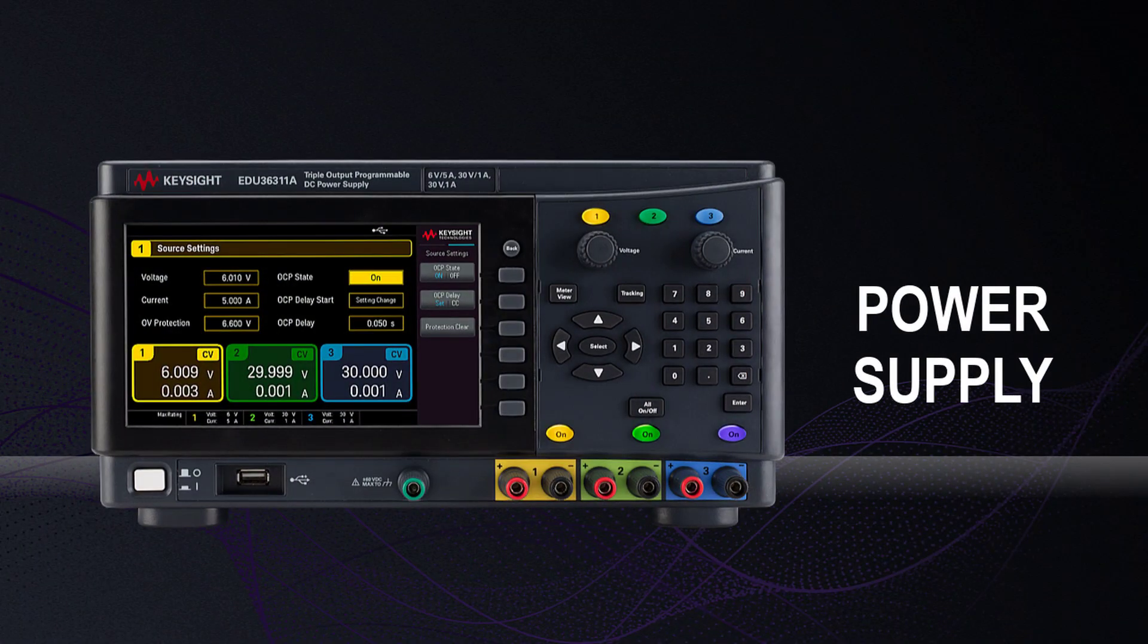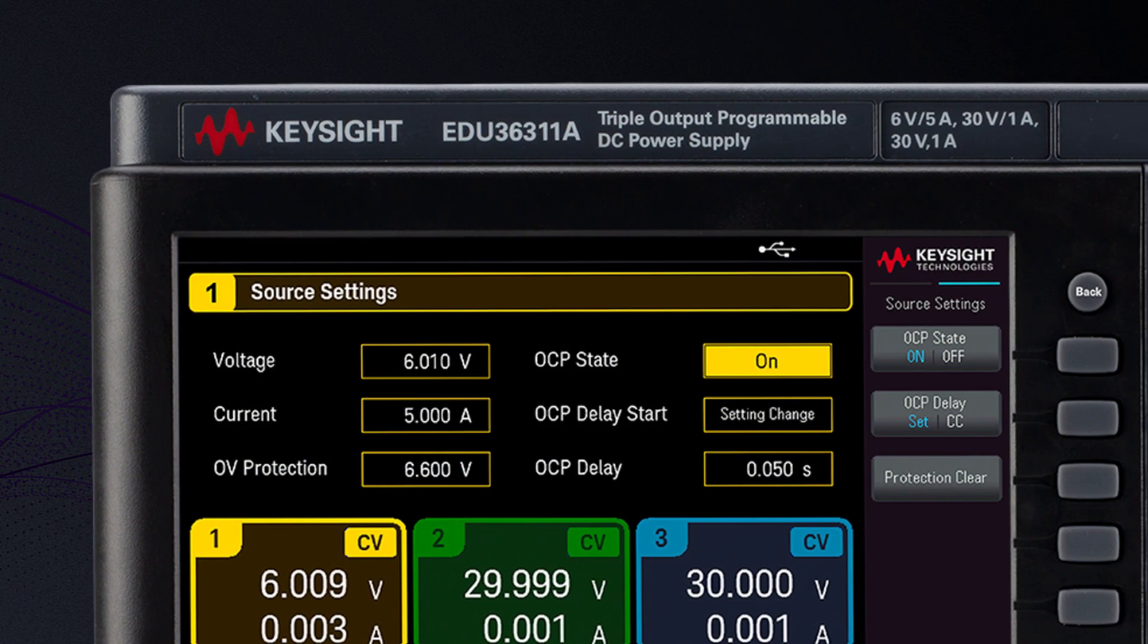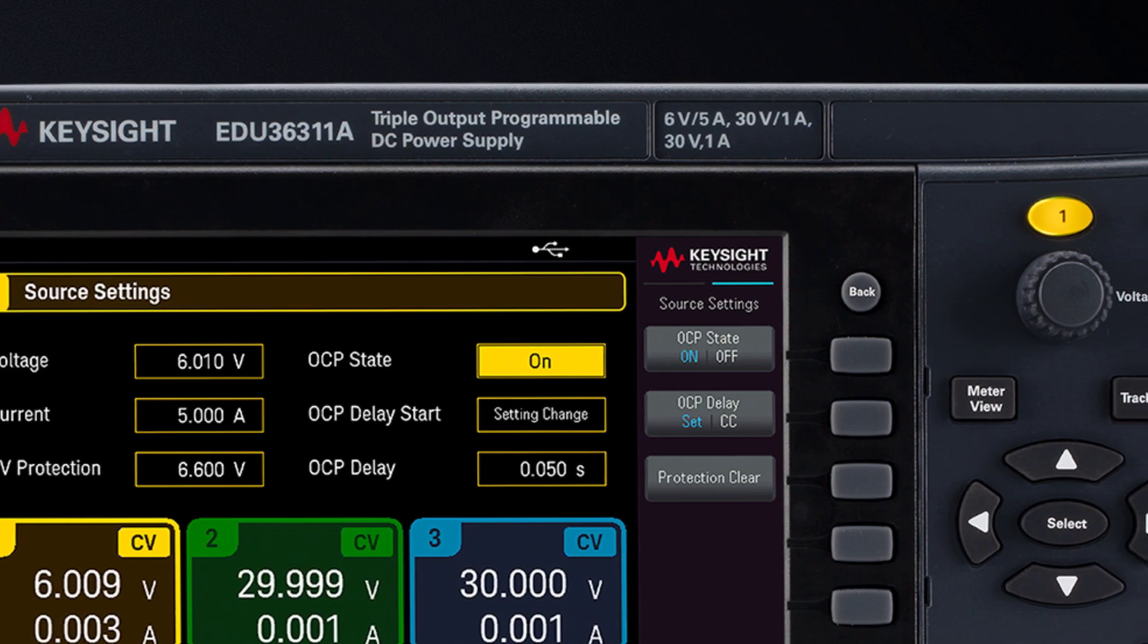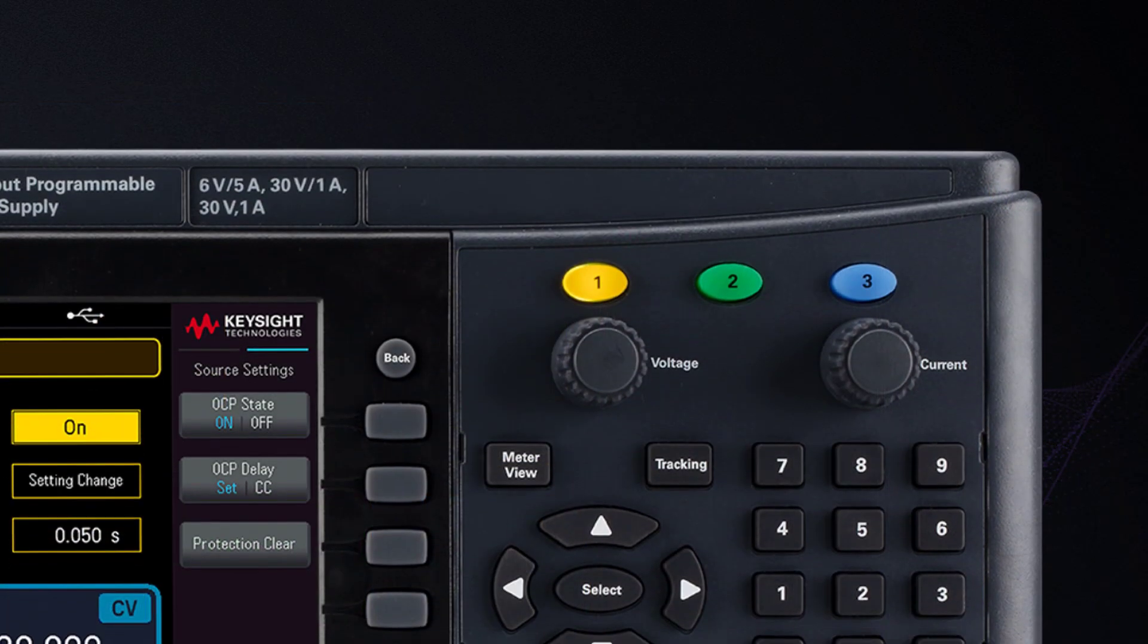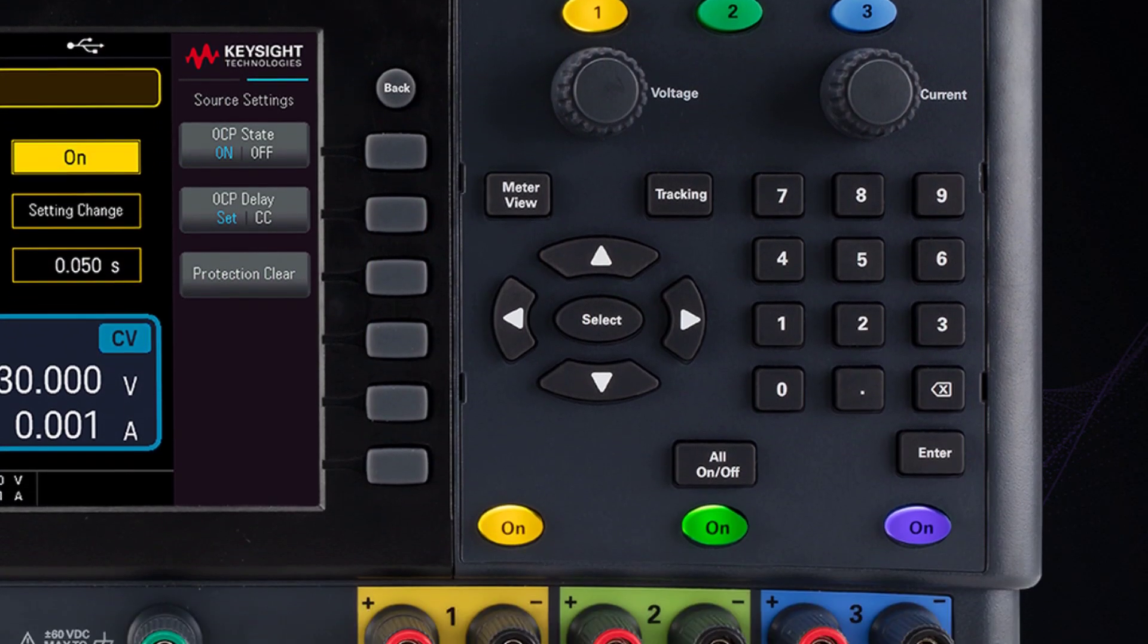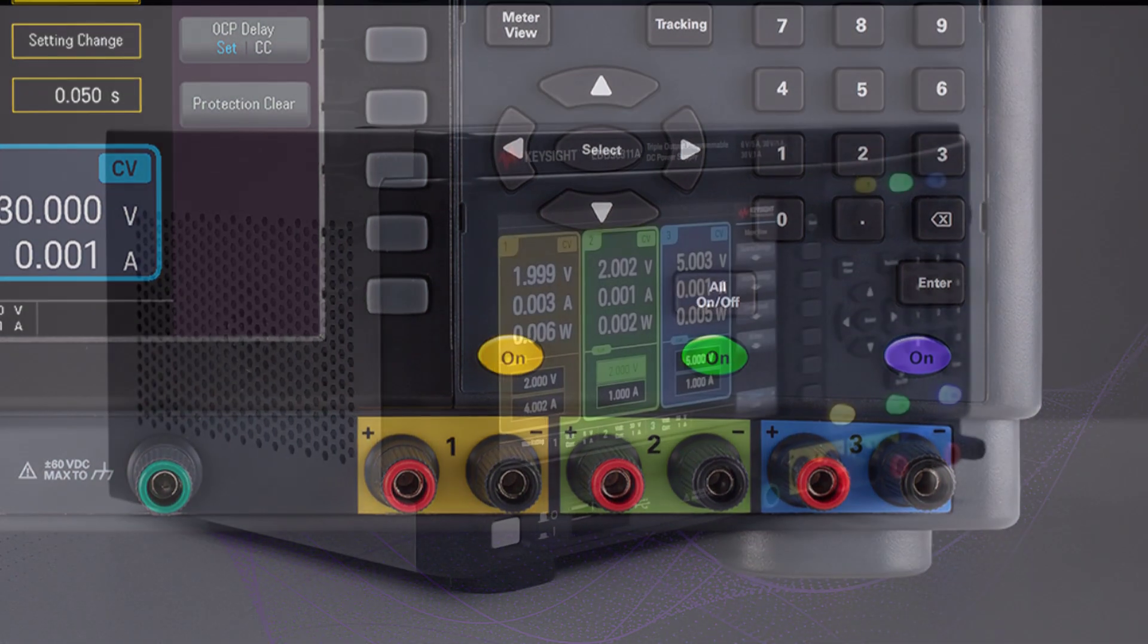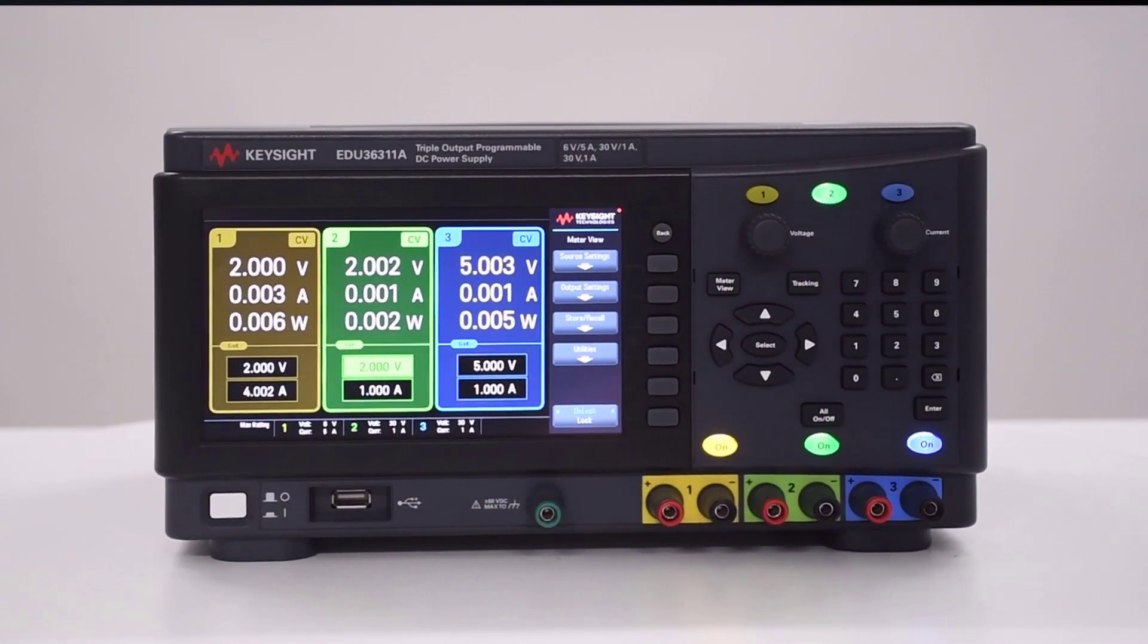The triple output DC bench power supply is ready for your next design with its 90 Watt electrically isolated channels that supply clean and reliable power. You can independently turn the outputs on or off to give you 3 power supplies in one.